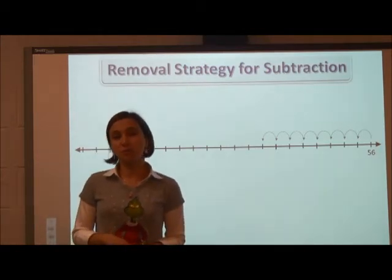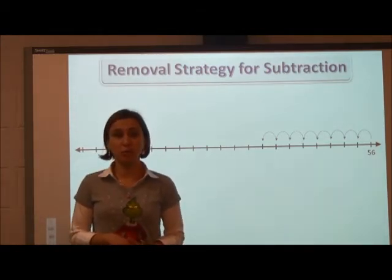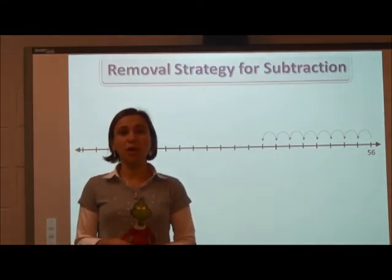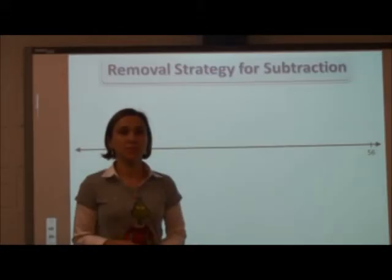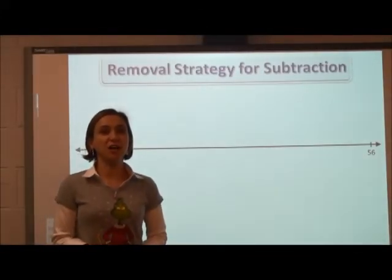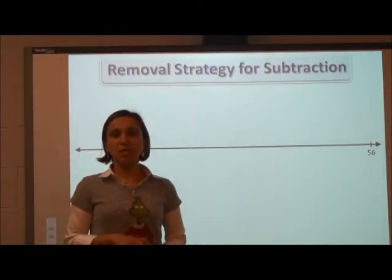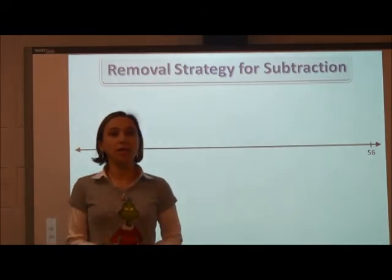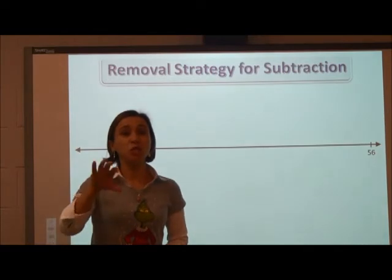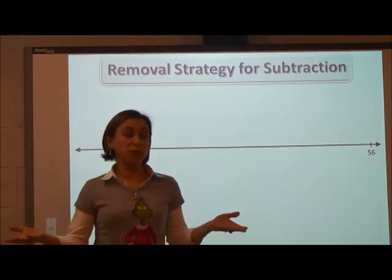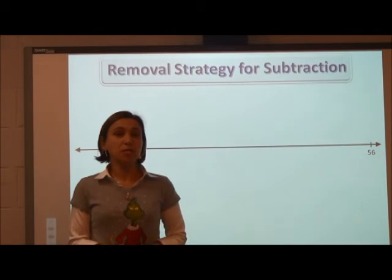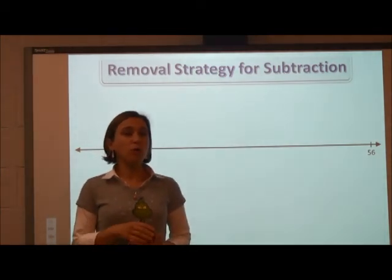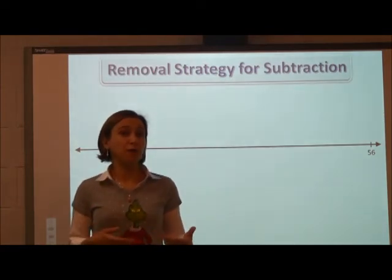There has to be a more efficient strategy for subtracting 56 minus 21. Today we're going to talk about a more efficient way to take away amounts or subtract. Today's strategy is called the removal strategy. So instead of removing one at a time and being there all day, we're going to look at removing chunks at a time, for when there's a bigger difference between two numbers. For example, that problem: 56 minus 21 — we're going to break that subtrahend into parts.